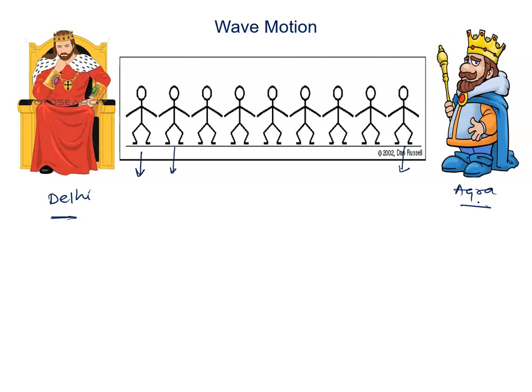This is the wave motion. It means disturbance which propagates the energy and momentum from one place to another place without the transport of the matter. It is known as the wave motion.